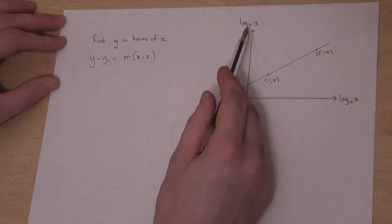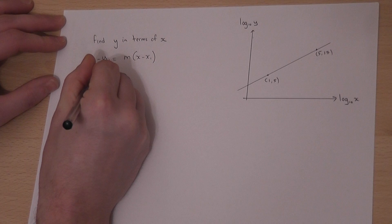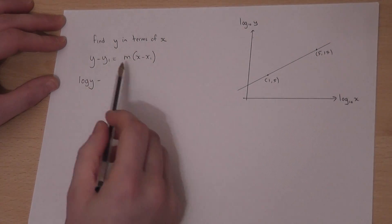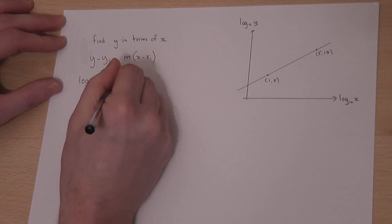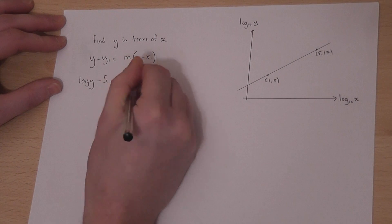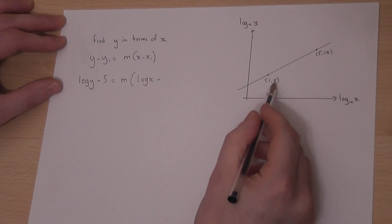I'll miss out the base 10 just for the moment. So, log y minus... I pick an x and y coordinate of my choice. I'll pick 1, 5. So, log y minus 5 must equal m log x minus x.